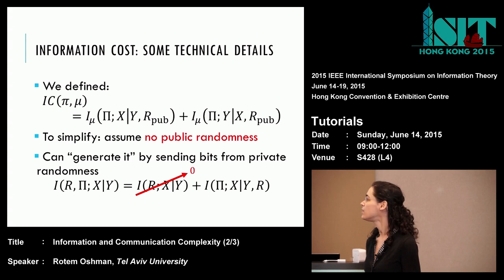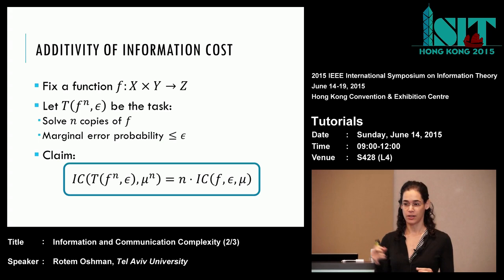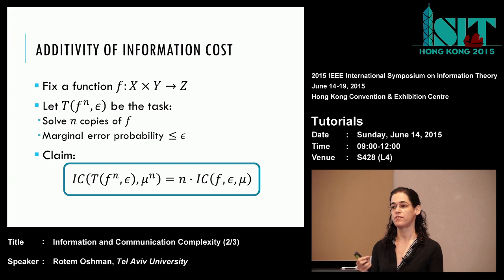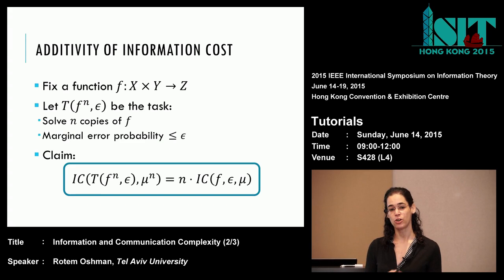So from now on, I'll be dropping the public randomness everywhere. I want to show you one of the key ingredients in the theorem that Mark pointed out — that information cost is the scaling limit of communication as the number of copies goes to infinity. This ingredient is the fact that information cost tensorizes: if I want to solve n copies of the same problem, I will have to pay exactly n times as much.